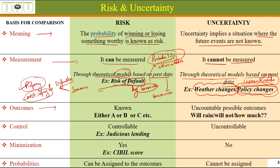Regarding outcomes — if a situation has either A, B, or C happening, that comes under risk. Where outcomes are uncountable — many many possible outcomes, like weather changes: will it rain, will it not, how much, in which area, will there be hailstorm, how much, at what time — there is a lot of uncertainty. The number of possible outcomes are uncountable or innumerable.